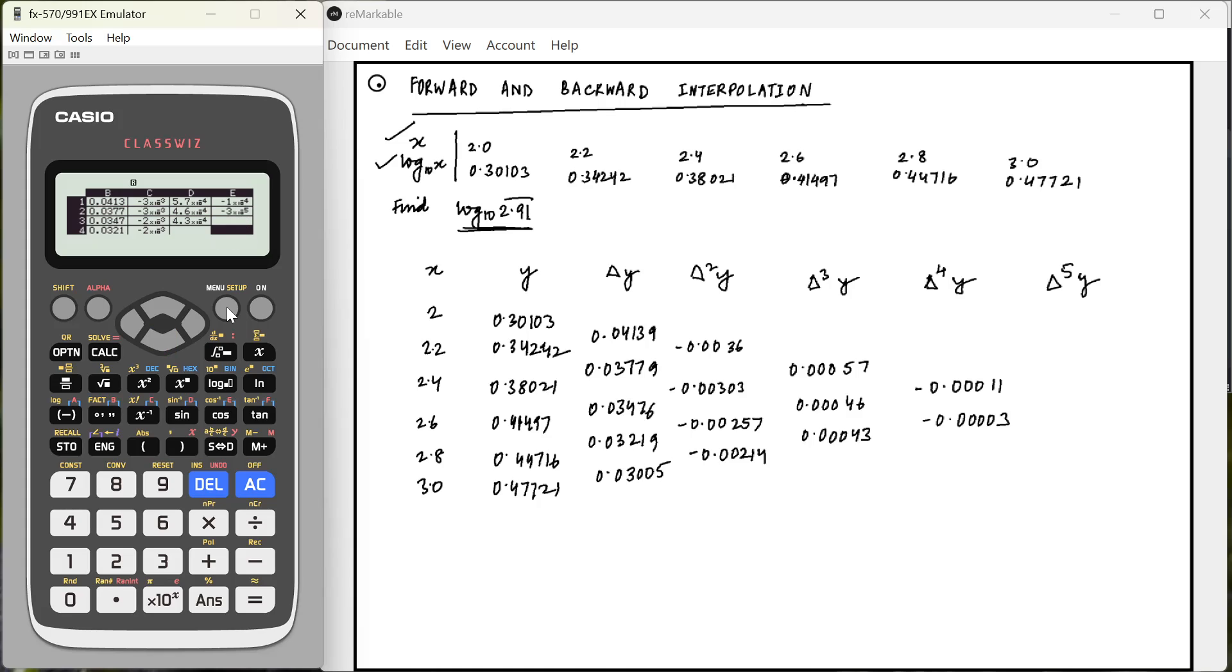Now for delta power 5, I am just going to calculate it. I am going to write equal to E2 minus E1 that will give us 0.00008.